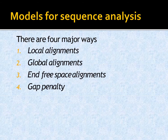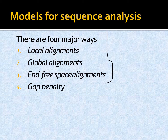There are four major ways to find the alignment score from two sequences: global, local, end-free space alignment, and gap penalty. We can add multiple sequences and find their gap score or sequence score using these four approaches.